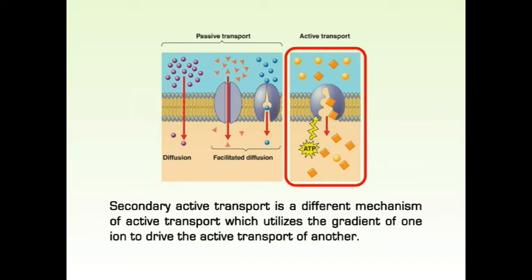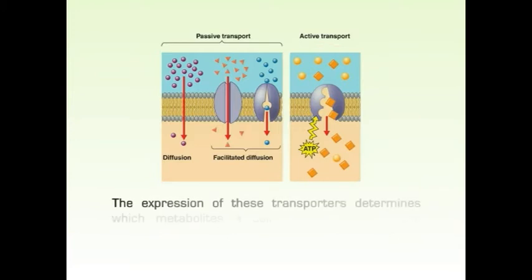Secondary active transport is a different mechanism of active transport which utilizes the gradient of one ion to drive the active transport of another. The expression of these transporters determines which metabolites a cell can import from the environment. Hence, adjusting the level of transporter expression is a primary means of controlling metabolism. Pumps can establish persistent gradients of particular ions across membranes.